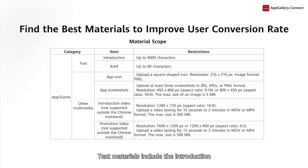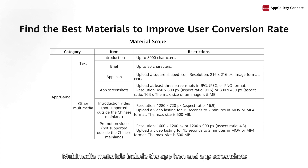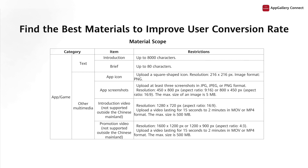Text materials include the introduction and brief information about your app. Multimedia materials include the app icon and app screenshots, and are all fundamental to releasing an app.